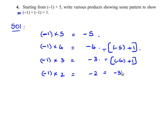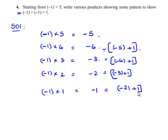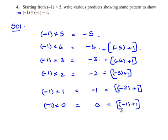Negative 2 can be written as negative 3 plus 1. Decreasing by another value: negative 1 times 1 equals negative 1, which can be written as negative 2 plus 1. Decreasing again: negative 1 times 0 equals 0, which can be written as negative 1 plus 1.